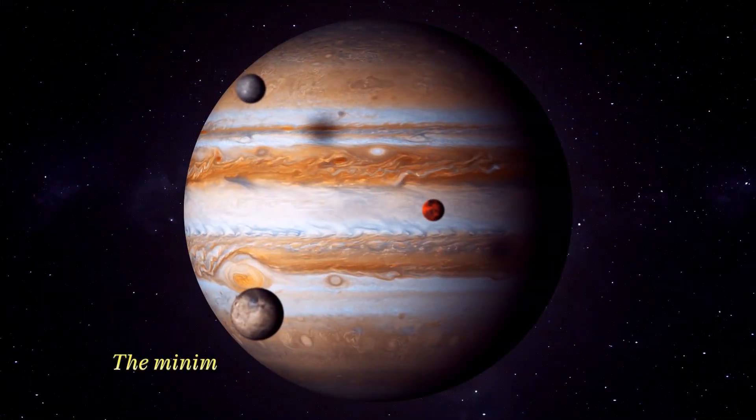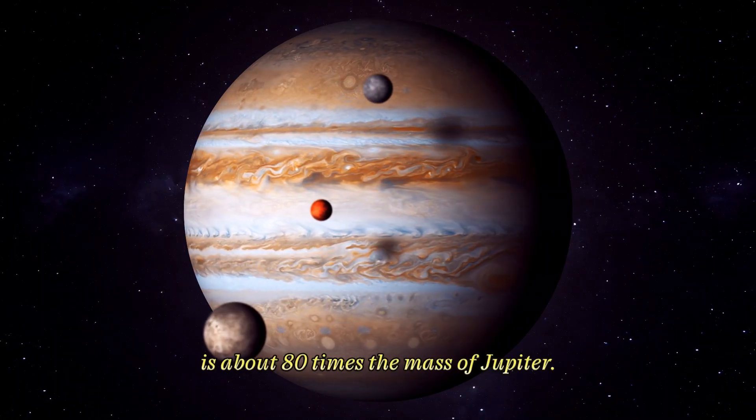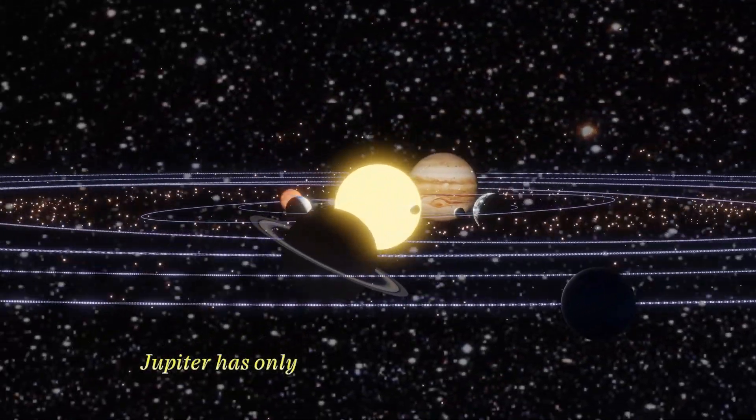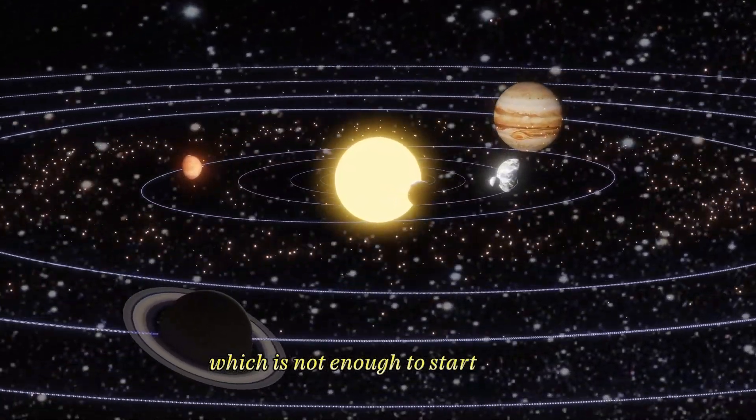The minimum mass for a star to sustain nuclear fusion is about 80 times the mass of Jupiter. Jupiter has only about 0.1% of the mass of the Sun, which is not enough to start fusion.